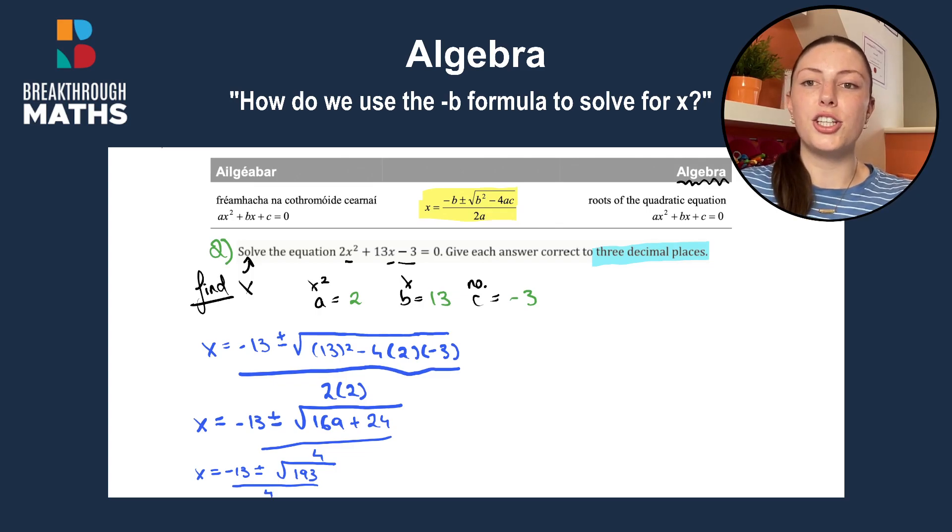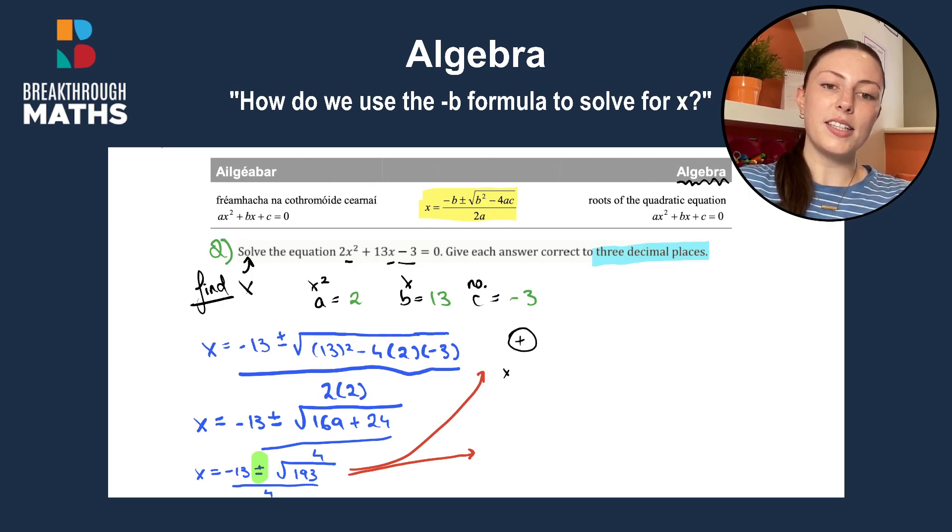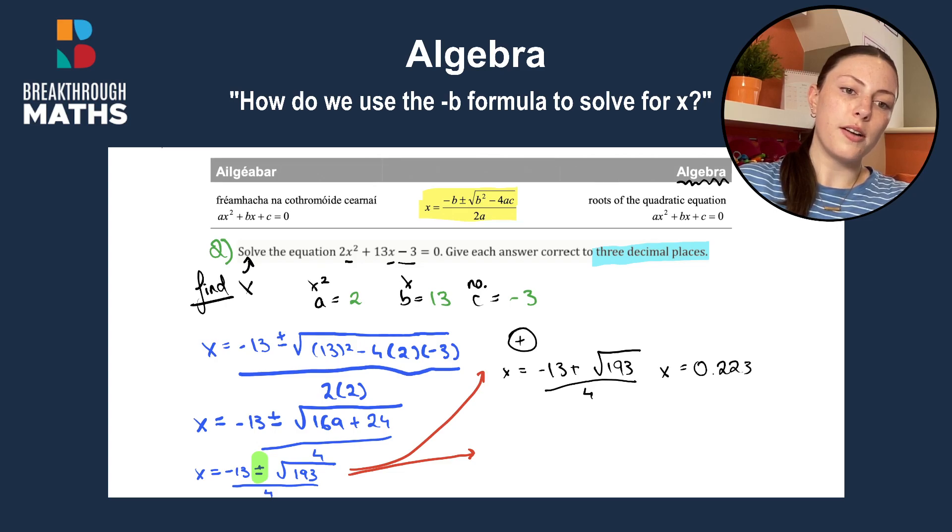Now we break it into two different options. Because it has a plus or minus, that means we're going to get two different answers for x. So now we'll show that with those two options. When we do the plus option first, we have x is going to be equal to minus 13 plus the square root of 193 divided by 4. And that gives you x is equal to 0.223, keeping it to three decimal places like they asked.